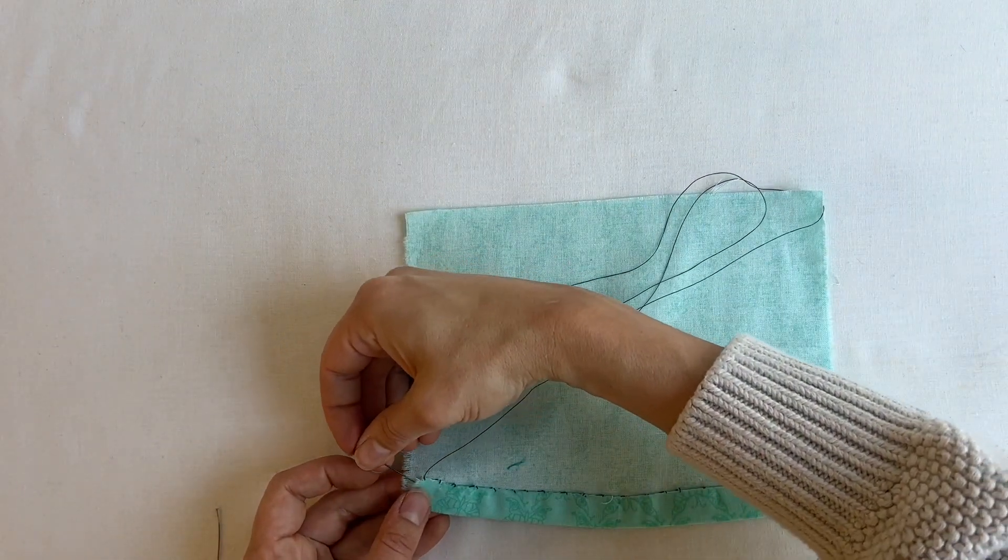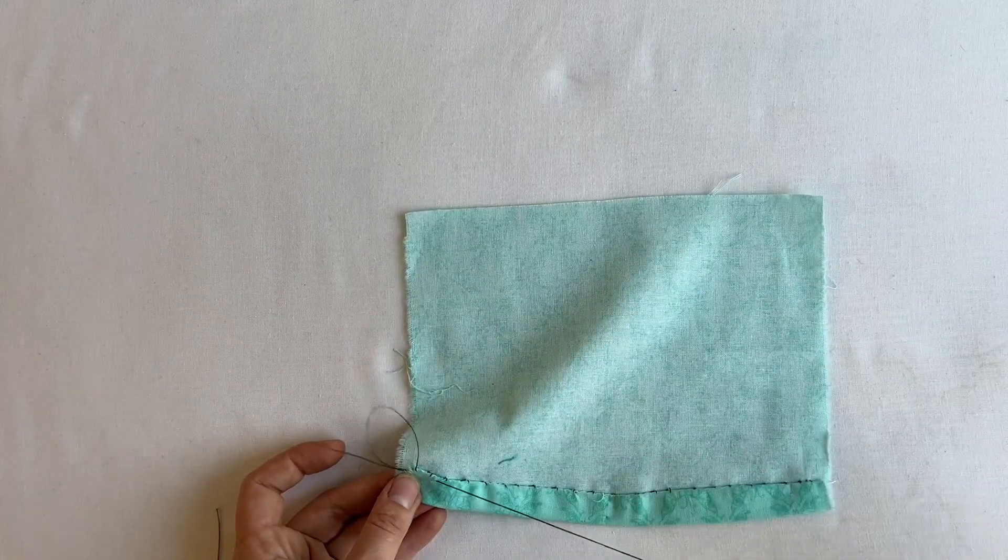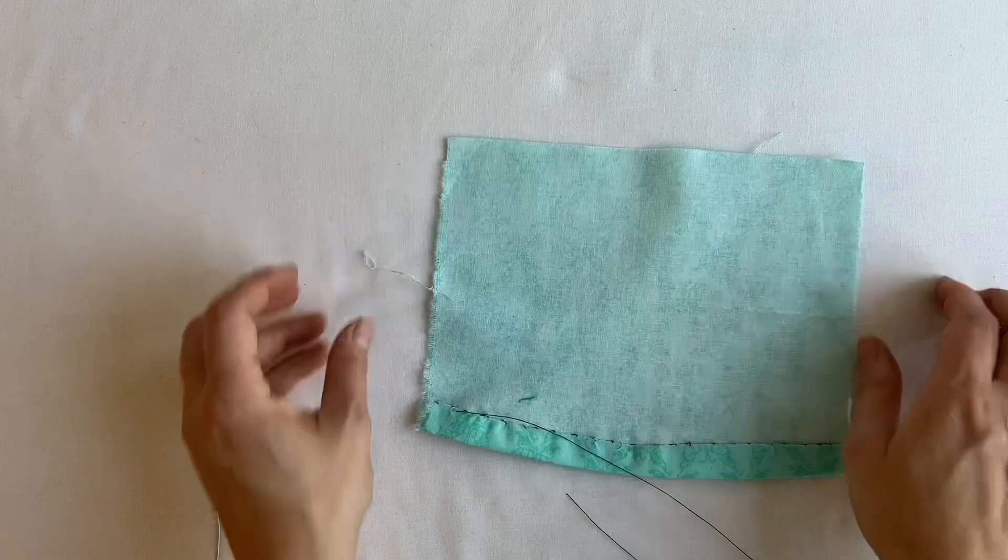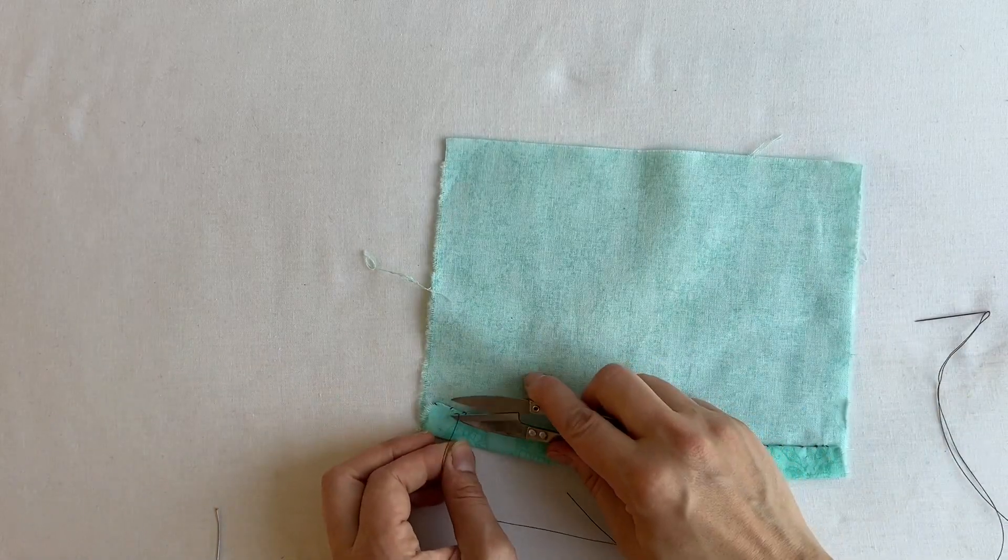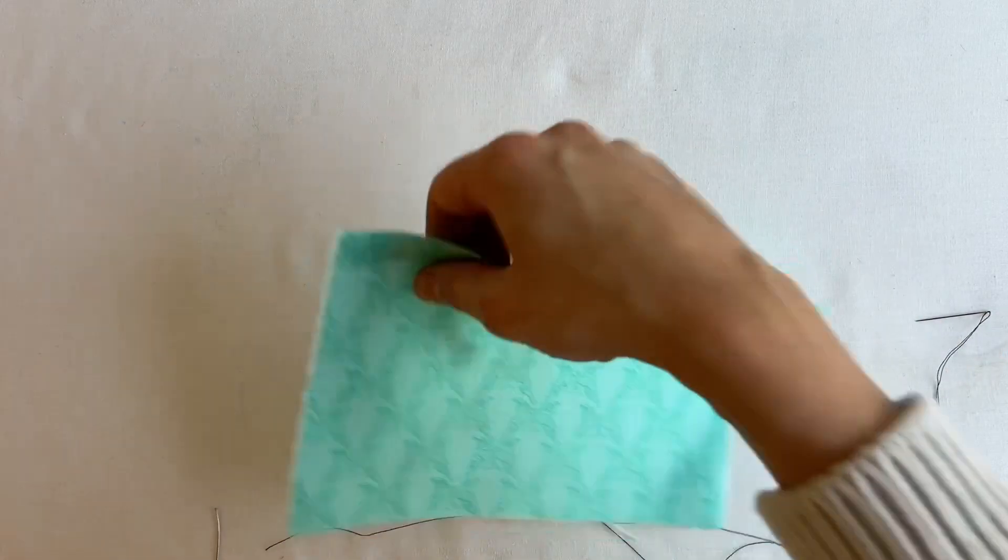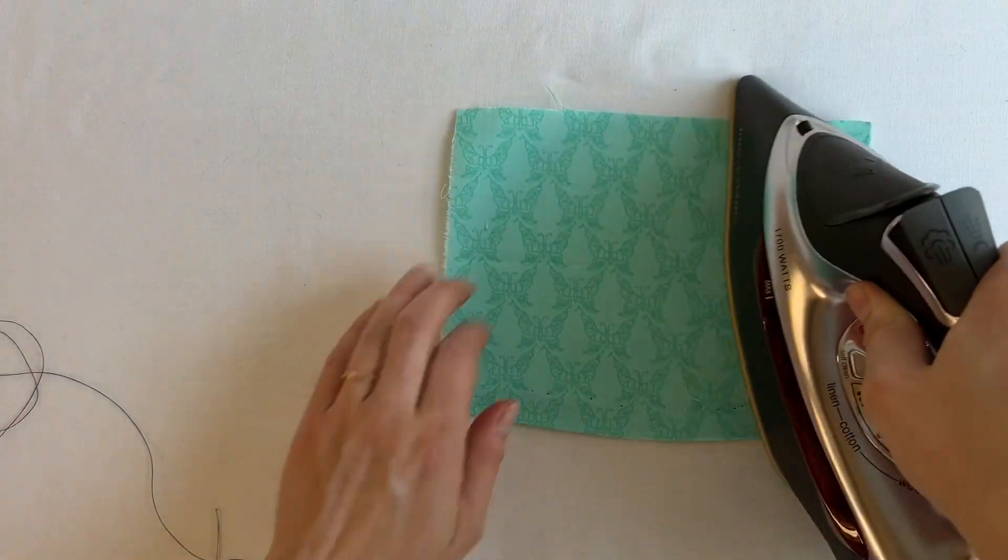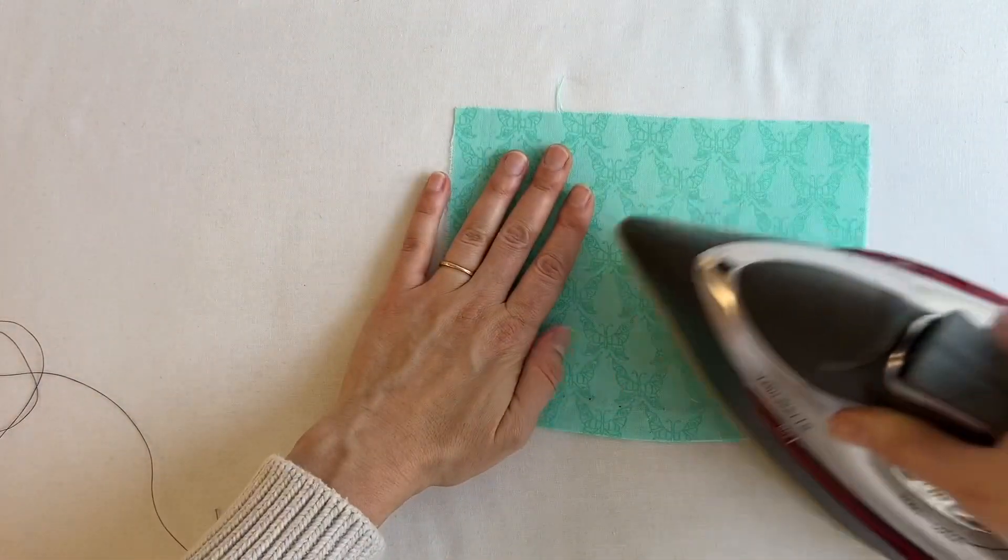Next you're going to take your needle and hide it in the tunnel of your fabric so that the thread tail is secured. Clip the thread tail close to the base of the fabric. Be sure that you don't see any marks on the other side. Press the hem and you have now completed your slip stitch.